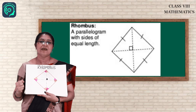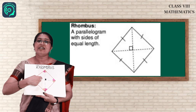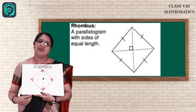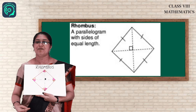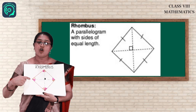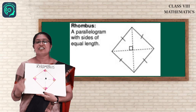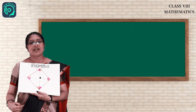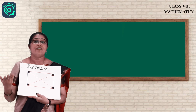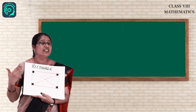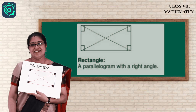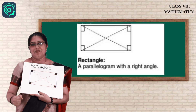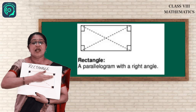What is the meaning of perpendicularly? When they intersect, the angle formed there is 90 degrees — that is the meaning of perpendicular. So for the diagonal of a rhombus, it intersects perpendicularly. Now we will go to the next quadrilateral. Children, you are very familiar with this one — rectangle.